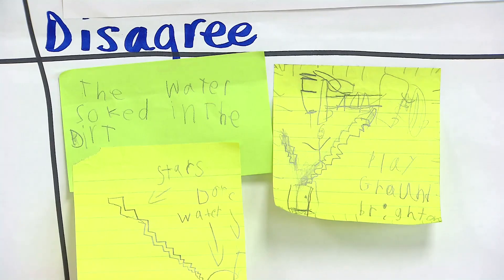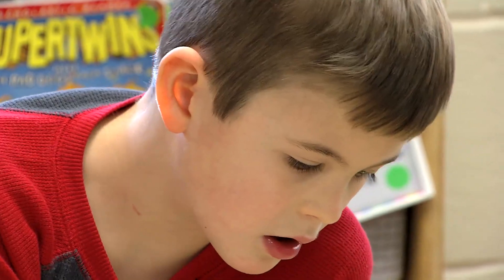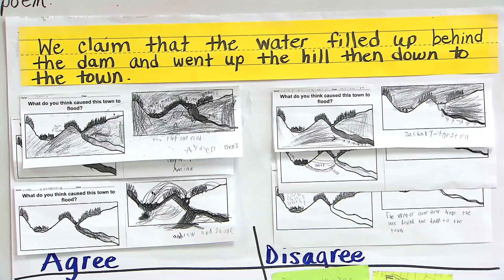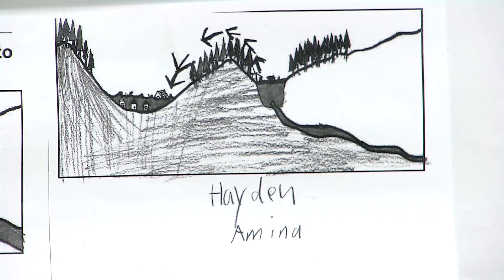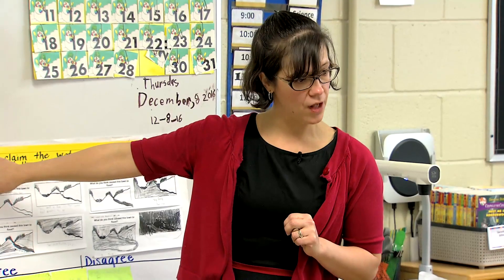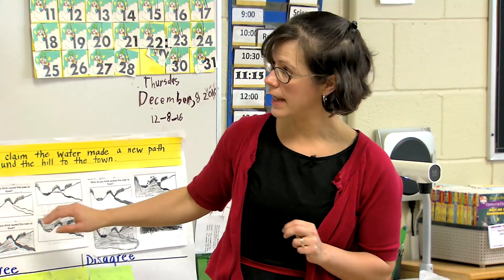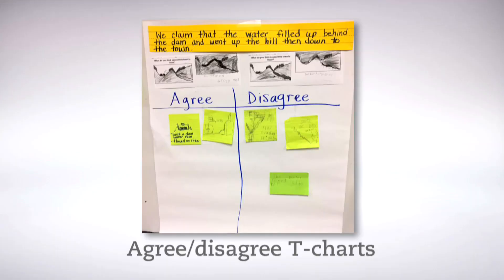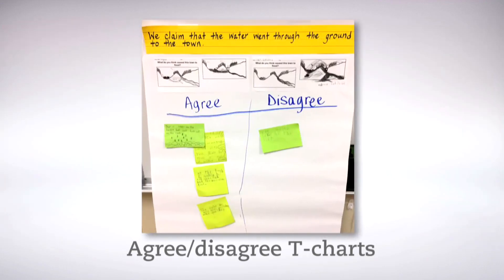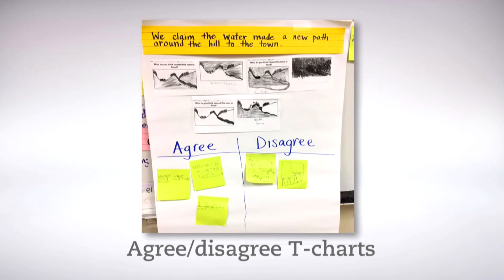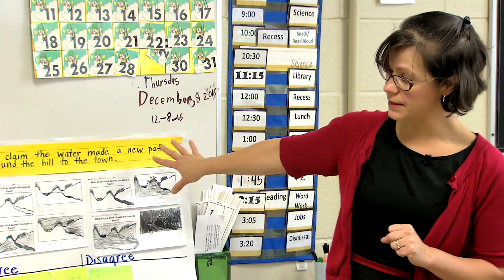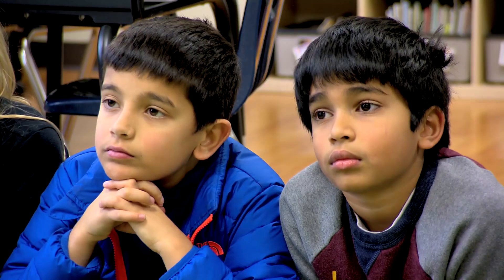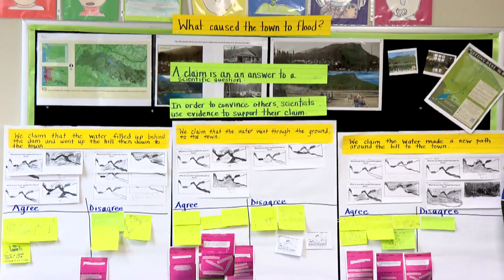Students used different color stickies to show the different types of evidence. We started with drawing our initial models and talking about our own ideas and personal experiences about what we think caused the town to flood, and we came up with three ideas — three claims. One where it filled up behind, another where the water went through the ground, and our third claim was that the water made a new path. We've been using these to make sense while collecting evidence on whether we agree or disagree with these ideas.